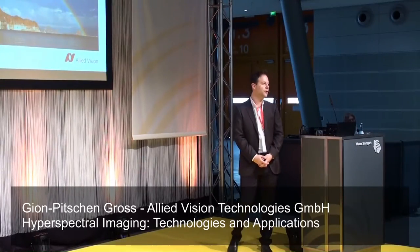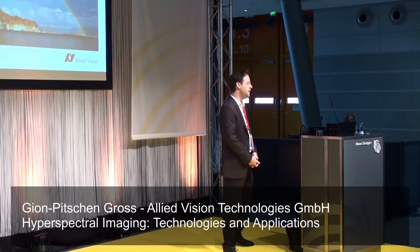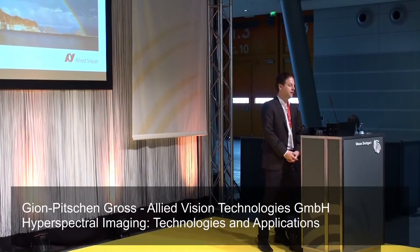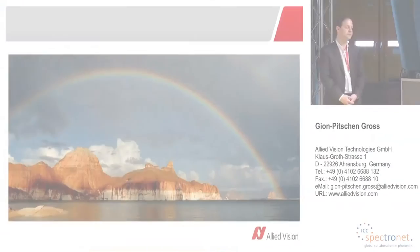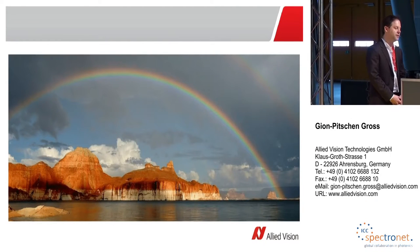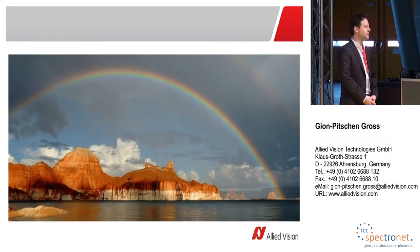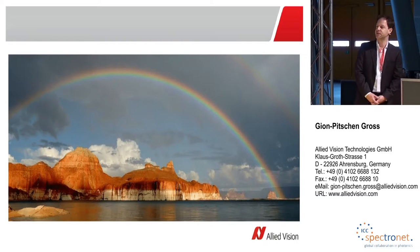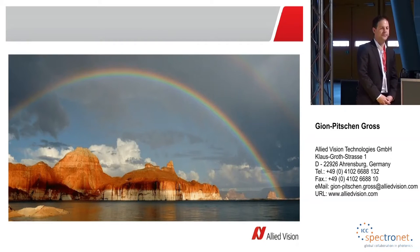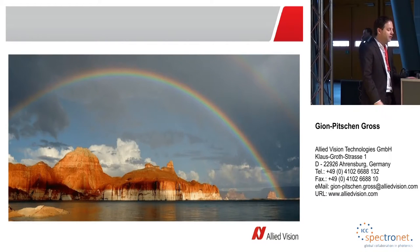Have you ever observed a rainbow on a rainy day and paused for a second? This beautiful phenomenon, where raindrops act as millions of small prisms, makes an important characteristic of sunlight visible. Sunlight consists of electromagnetic waves with many different wavelengths, some of which in the rainbow we can see as colors.